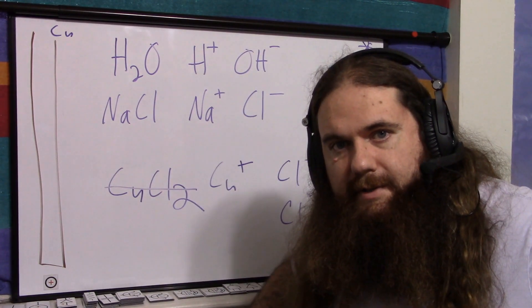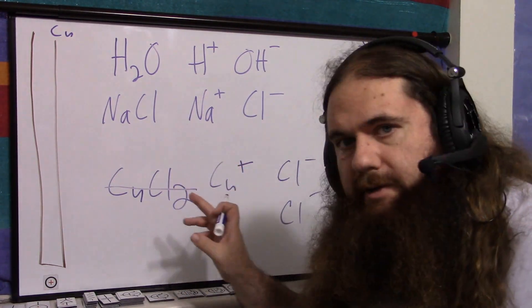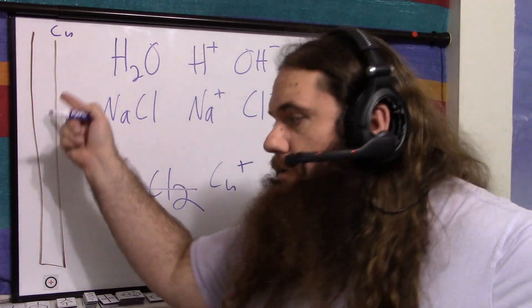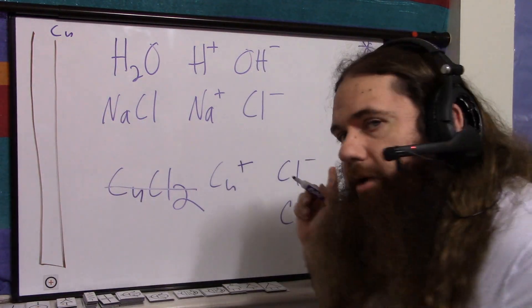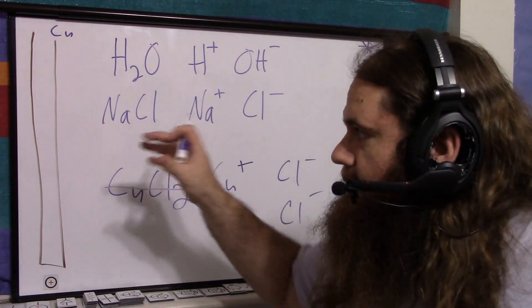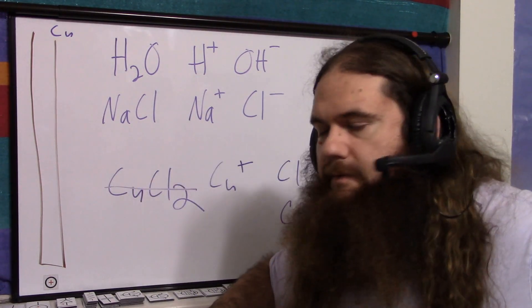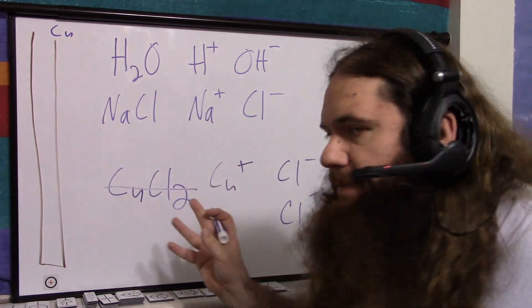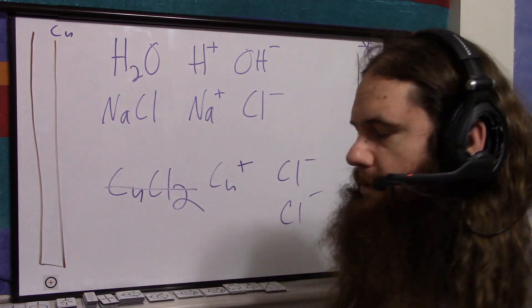Good news. However, the copper now is a problem because the copper is floating around all loose and it can grab on. It can go back to where you just took it from. It can go and grab on to the other one. It can bind up some of the chlorine and reduce the efficiency of the reaction. The copper is sitting around being a nuisance.